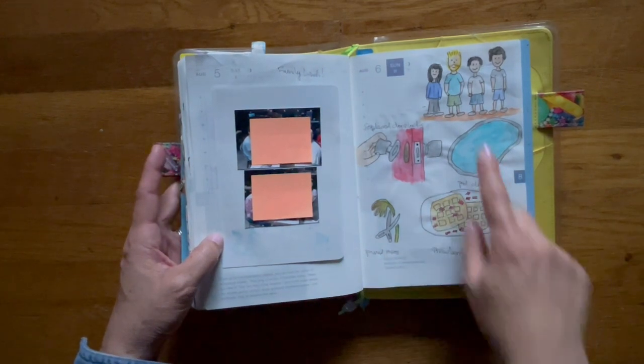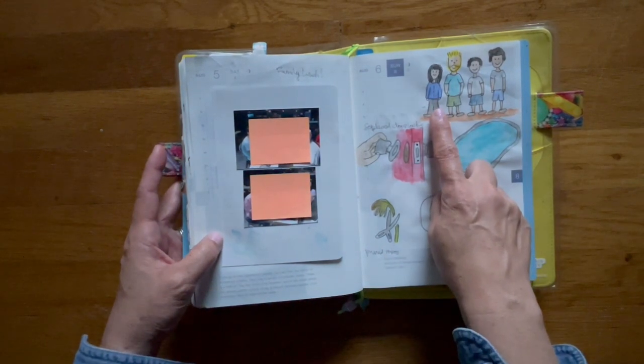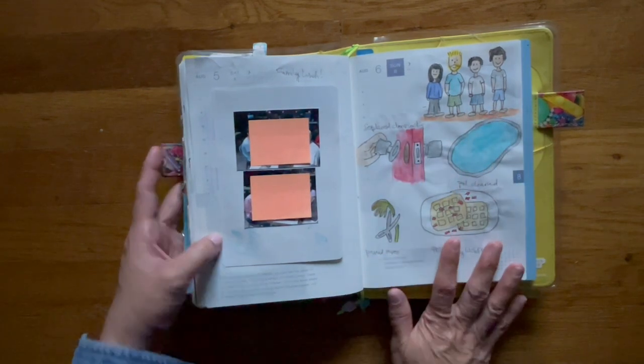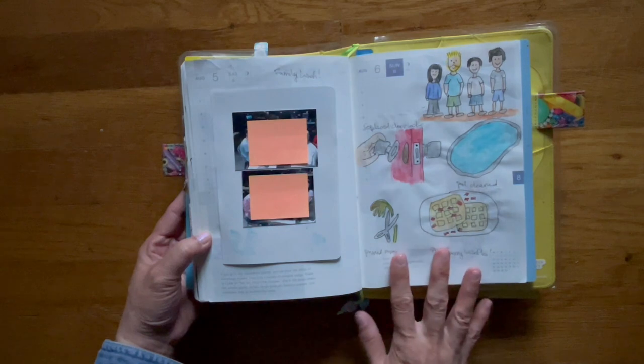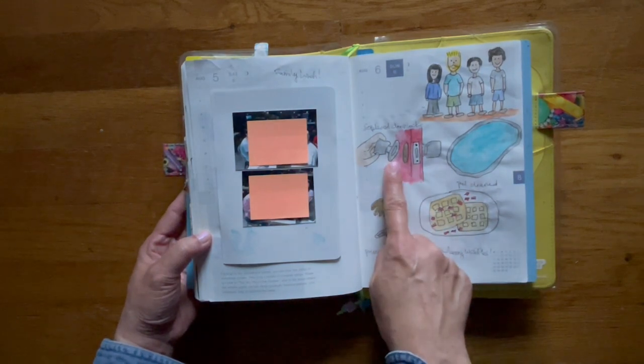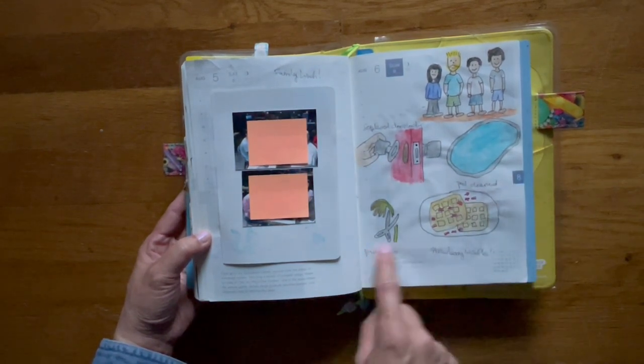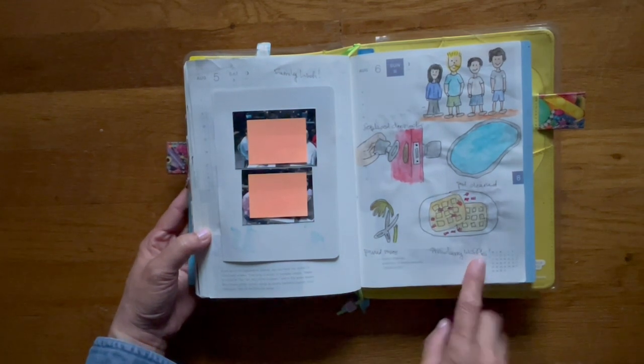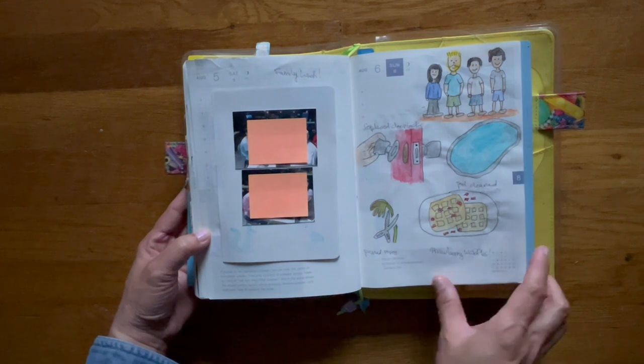And then on Sunday, last Sunday, this is a drawing of myself, my husband, my brother, and my nephew. He's getting ready to sell his house. And so we went over there to help out to change the door locks. I helped prune the roses. And then afterwards we had breakfast together. And I had strawberry waffles which were pretty good.